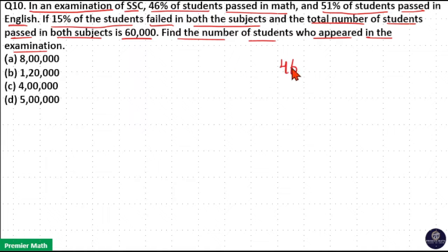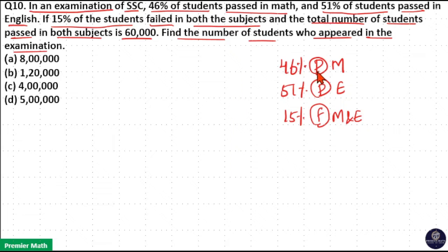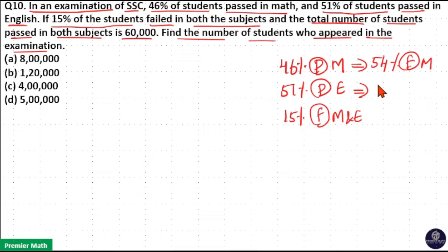Here, 46% of students passed in maths, 51% passed in English, and 15% of students failed in both maths and English. The combined data is for failed students, so we need to find the percentage of students who failed in each subject. If 46% passed in maths, then 100 minus 46 equals 54% failed in maths. If 51% passed in English, then 100 minus 51 equals 49% failed in English.